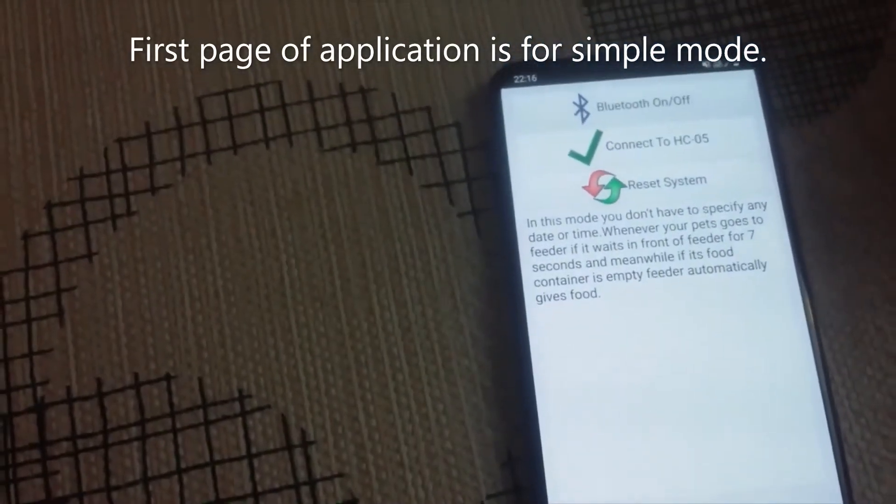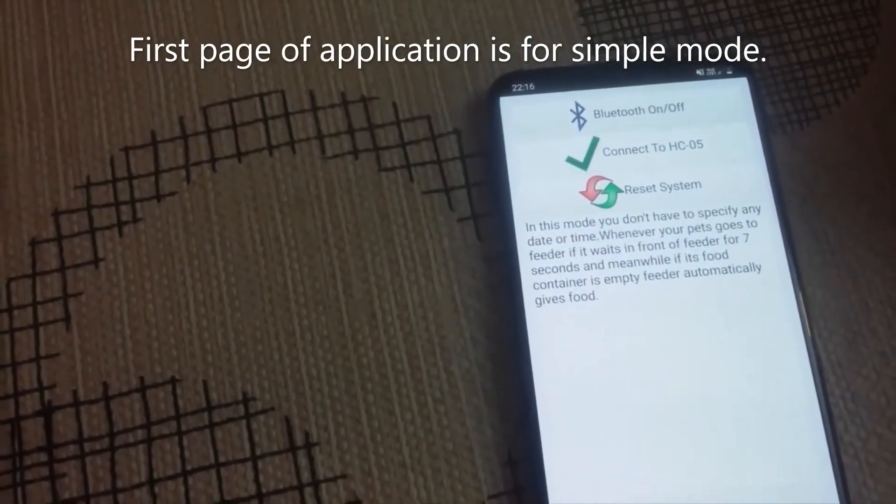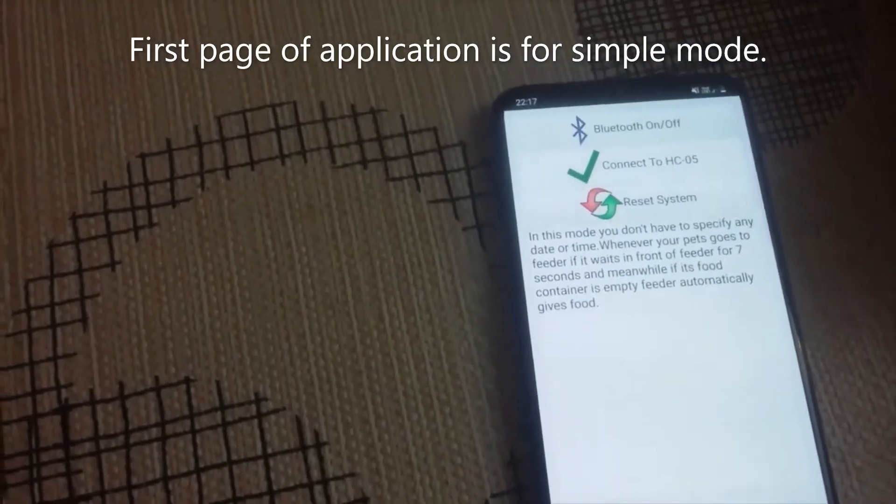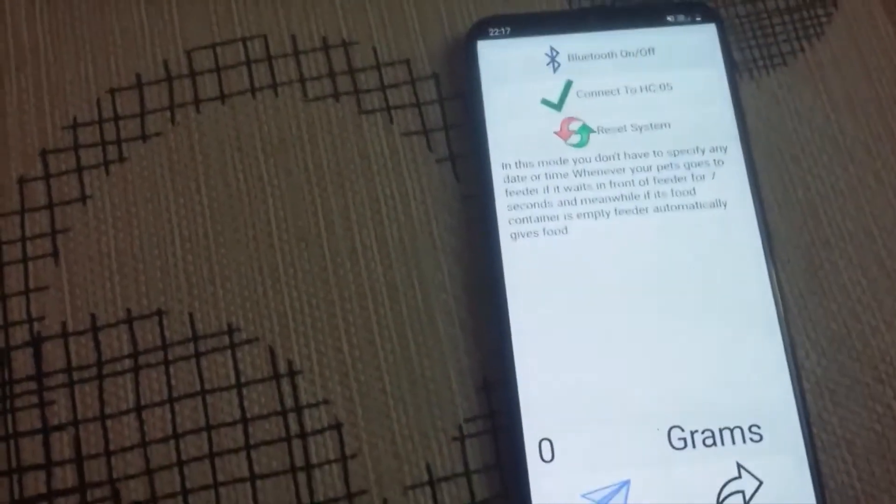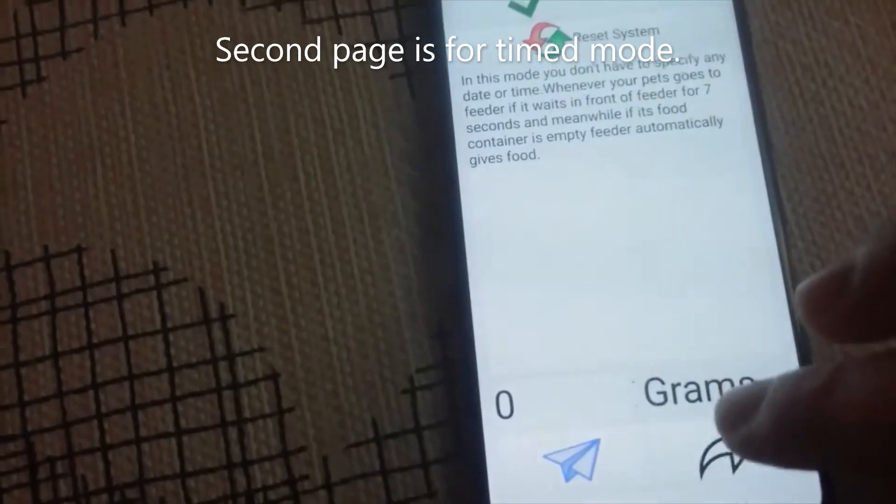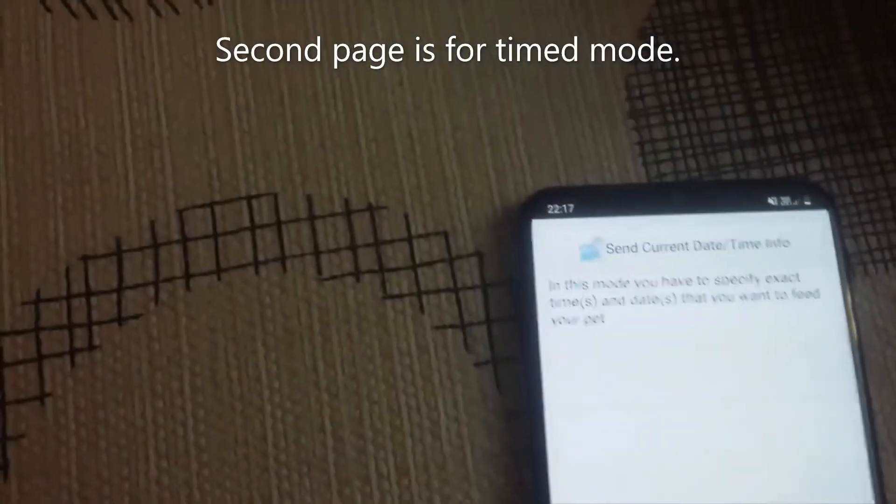The first page of the application is for the first mode, called simple mode, but the second page is for timed mode.